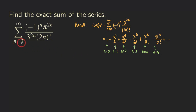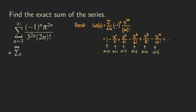What this means is that we need to start at n equals 3. So that means we do not have those first three terms compared to the Maclaurin series. Now let's manipulate this series: we can write it as a summation from n starting at 3 to infinity, and write the expression in the form of the Maclaurin series. So we put negative 1 to the n in the front.